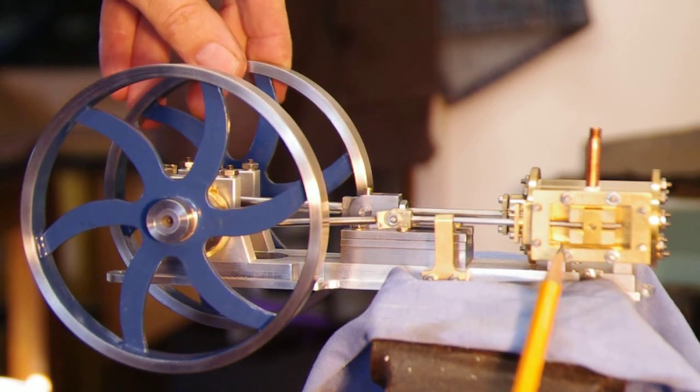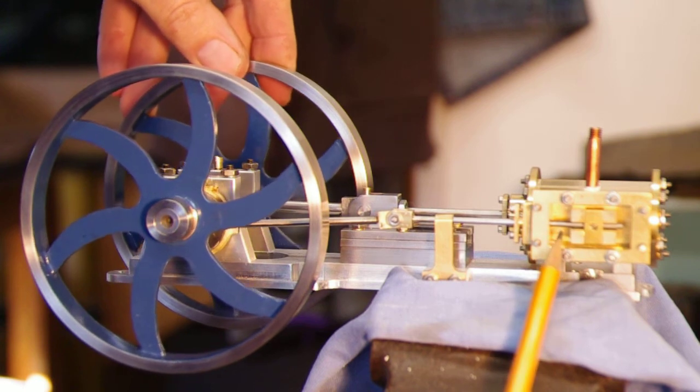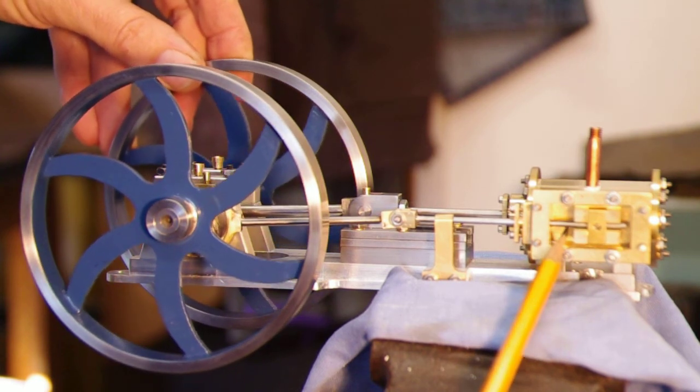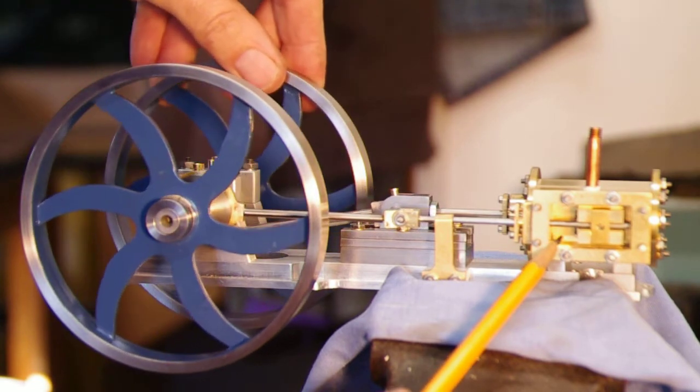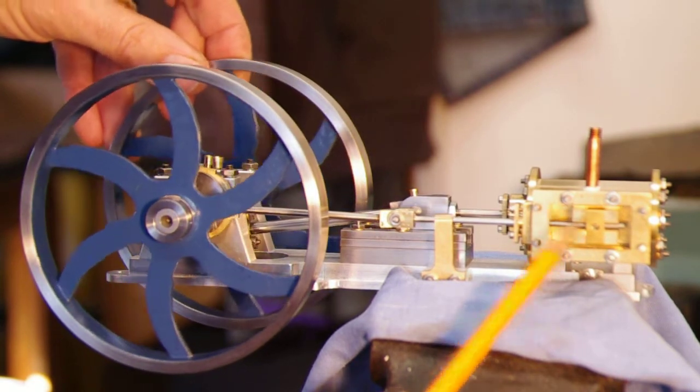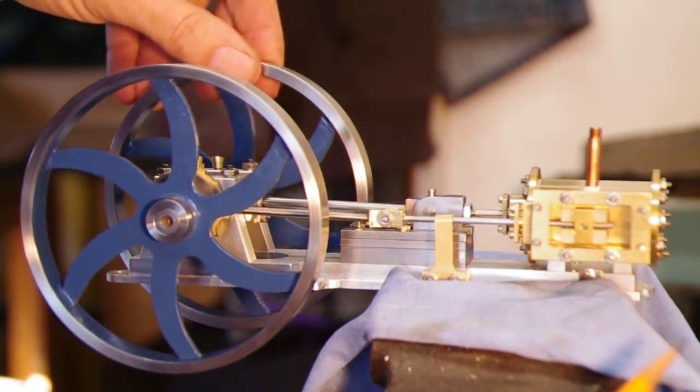Here we've reached bottom dead center. Now it's starting to reverse, and this aperture over here starts to open, allowing the steam in to push the piston back towards the top. That's how it cycles.